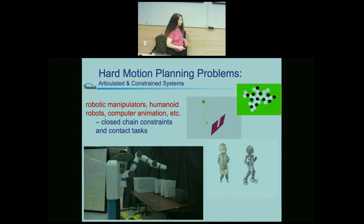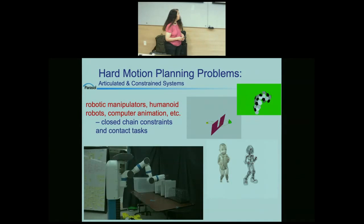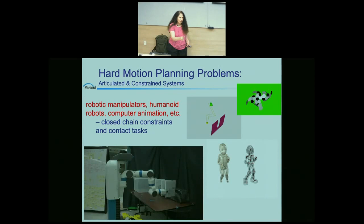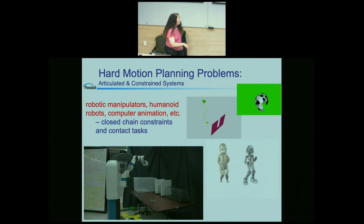Down here on the lower right is a robot manipulator trying to move and grasp binders, pick them up, and put them in a bin — so you have to plan for the arm to avoid collision, get the gripper around the binder, grip it, pick it up, and put it in the bin. The most challenging problem on this page is actually the lamp on the upper part, because it has three chains that have to move together in a coordinated way to move the lamp through that opening.